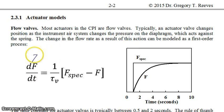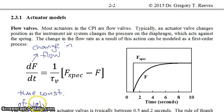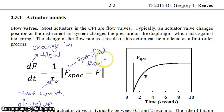The first-order model gives: df/dt = (1/tau_v) × (f_spec − f), where tau_v is the time constant of the valve — a parameter associated with your specific valve that must be measured. Each valve will have a slightly different time constant; one valve might be sticky while another is well-oiled and smooth. Here f_spec is the specified flow (the computer signal to the actuator) and f is the actual flow.